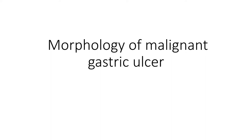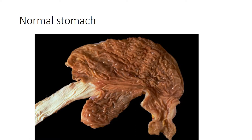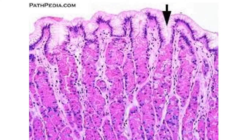Today we are going to learn the morphology of malignant gastric ulcer. Here on the left side you can see a gastric specimen — this is the lower end of the esophagus, here is the body of the stomach, and this portion attached to the duodenum is the antrum. Here is the histology of normal gastric mucosa, which consists of surface epithelium, the pits, mucosal glands, and stroma in between.